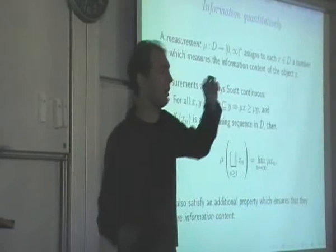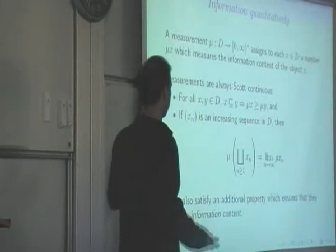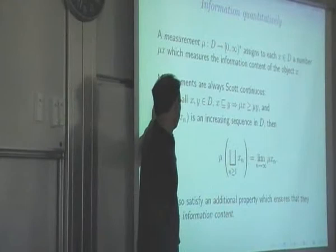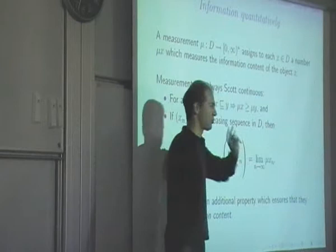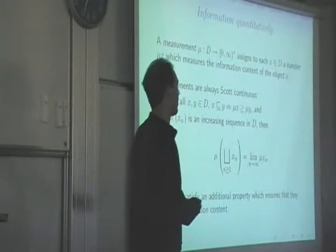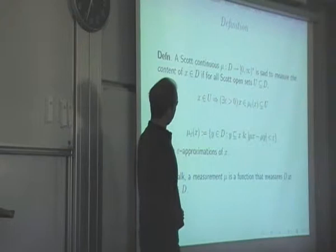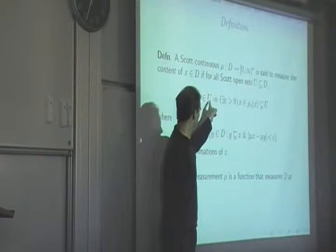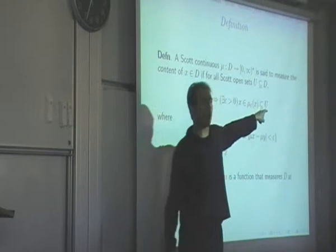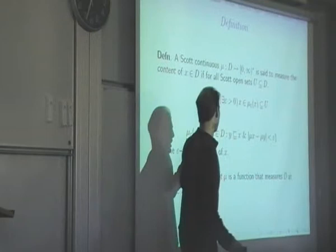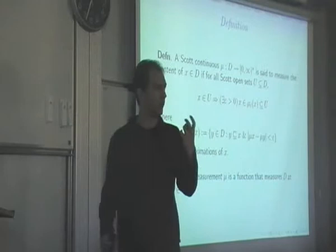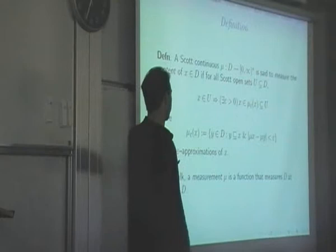They have this other property which is just called the measurement property. Any approximation u of x is also an approximation about things which are epsilon close to x. The catch is that when you say epsilon close, you're actually involving the measurement, and that's what means you're measuring information content — it's not just continuity. Now, actual measurement property is much stronger than this, but this is the minimal thing. This could be a very hard condition to verify.